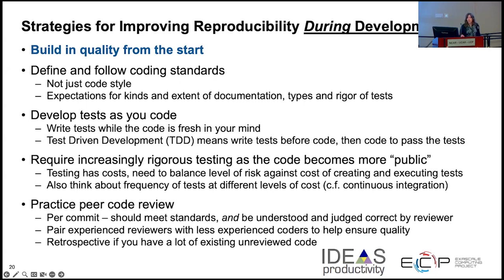Require rigorous testing as the code becomes more public. Use nightly tests for things that can't go into continuous integration. Think about the frequency of tests — what are your sanity checks to quickly know if a commit is good? Practice peer code review. Every commit should meet standards and be understandable by a reviewer. At least at a pull request, go through peer code review to ensure quality and that things aren't breaking in another area.